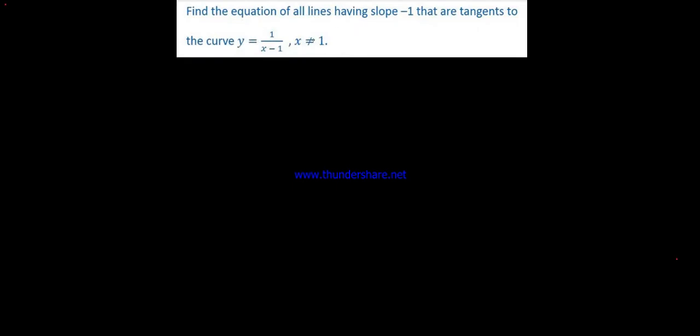Find the equation of all lines having slope of minus 1 that are tangent to the curve y equals 1 over x minus 1, where x is not equal to 1.